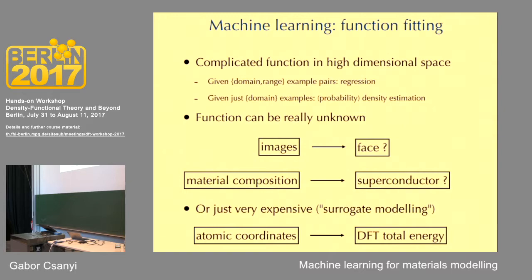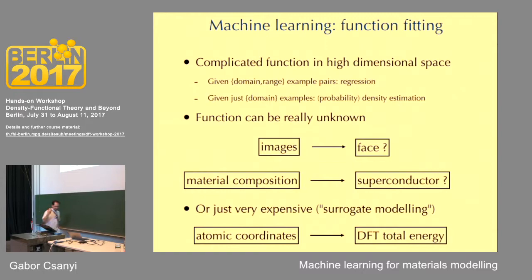We're trying to build a surrogate function that is like the expensive function but much cheaper. For example, if I give you atomic coordinates, one can compute the DFT total energy — you may have done that last week. But if I give you 10,000 atoms and want to do molecular dynamics — computing this function 10 million times on a laptop — you're going to struggle. So the question is: should you write a grand proposal for a bigger computer, or can we take this well-known, very expensive function and construct an approximate function that is much cheaper?